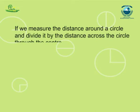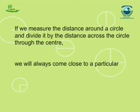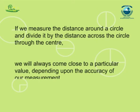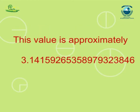If we measure the distance around a circle and divide it by the distance across the circle through the center, we will always come close to a particular value depending upon the accuracy of our measurement. This value is approximately 3.1415926535897932384.